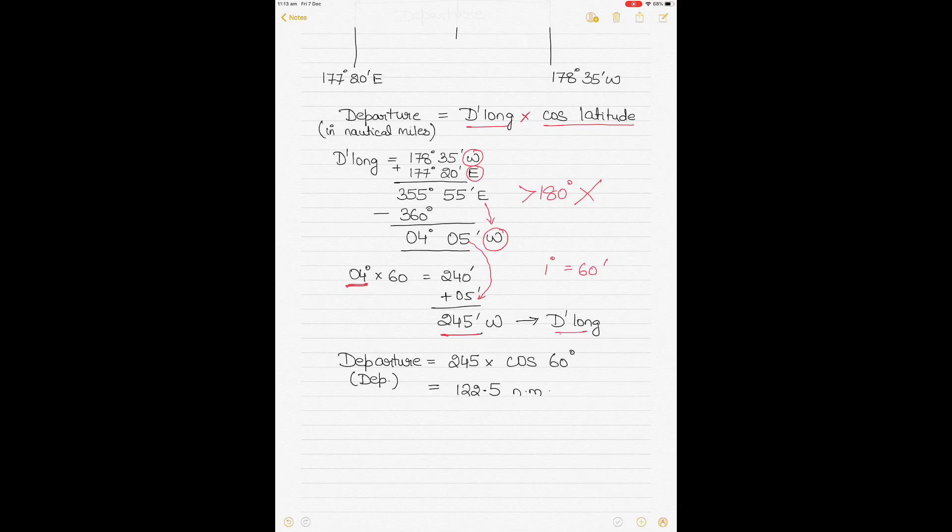And that will be the final D long in minutes. Why we have converted it, just to repeat myself, because we are calculating departure which is a unit of distance, so we need to have all the units in distance. Of course, 245 times cos of latitude, and because latitude has to be calculated in a trigonometric fashion, you keep it in degrees.